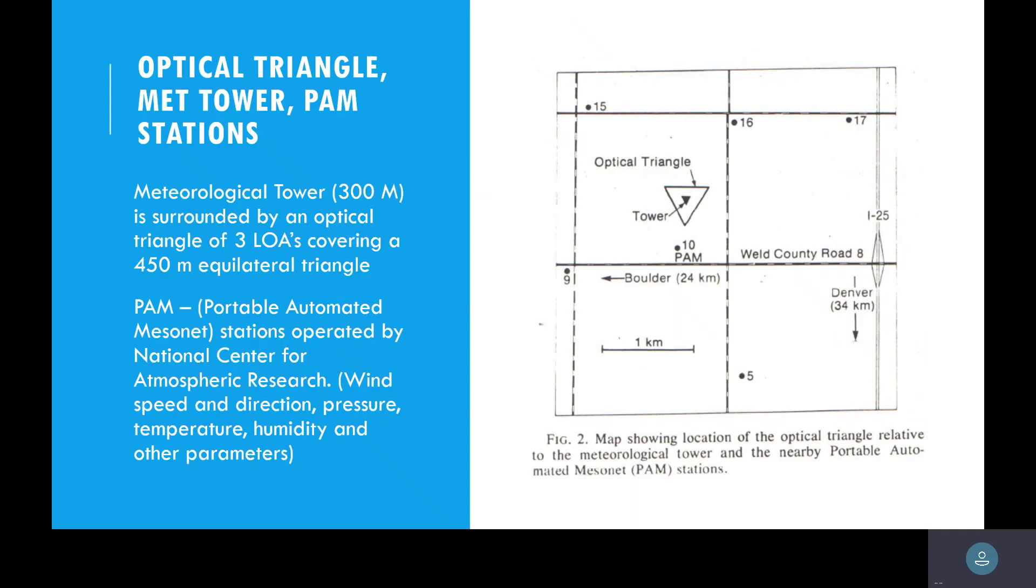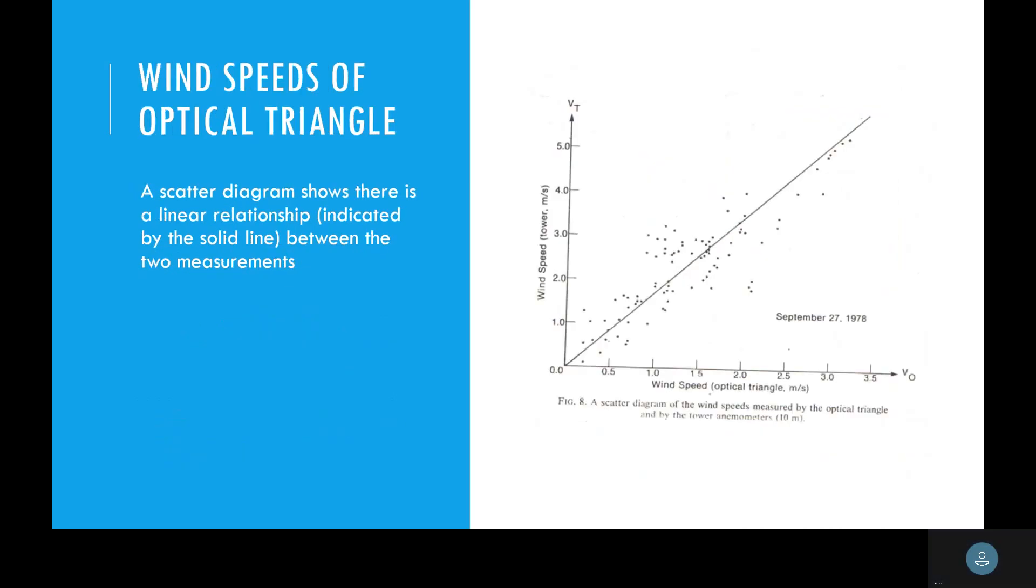This is an optical triangle, Met Tower and PAM station study that we did. We had a tower in the middle of that, and it was 300 meters surrounded by three LOAs covering a 450 meter equilateral triangle. Then we had these PAM stations, which were basically weather stations that were around collecting wind speed, wind direction, pressure, temperature, humidity, and some other parameters. What we found is this data scatter diagram shows the near linear relationship between the two measurements.